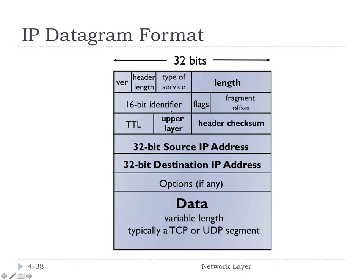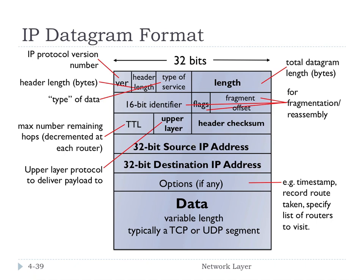There is a 16-bit identifier, flags, and a fragment offset — all three are used for fragmentation and reassembly of packets, which we'll talk about later. There is a time-to-live field, TTL, which is a number that decrements on each hop, and once it reaches zero the packet is dropped. That ensures packets don't get stuck in an infinite routing loop. The header length is typically 20 bytes with no options, but could be longer if options are present.